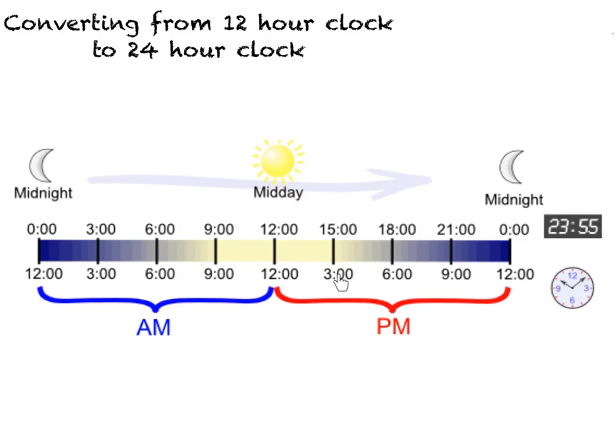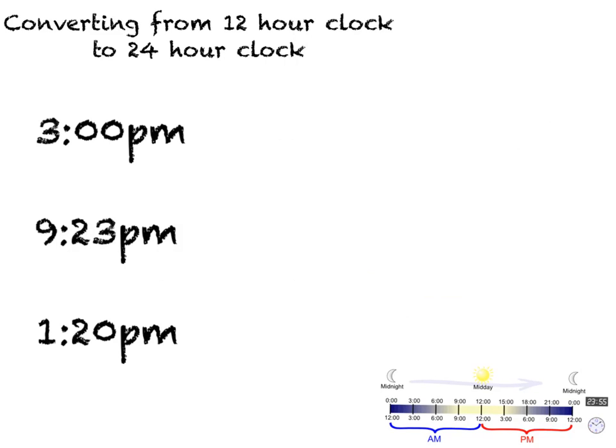At 3 o'clock we have to add 12 and make it 1500 hours because the first 12 hours of the day have gone and we add another 3 hours to it. At 6 o'clock PM, it's 6 add 12, the first 12 hours of the day, so 12 add 6 would give us 1800 hours. We'll just demonstrate this by adding 12 to each of these afternoon times to show their times in 24-hour format.